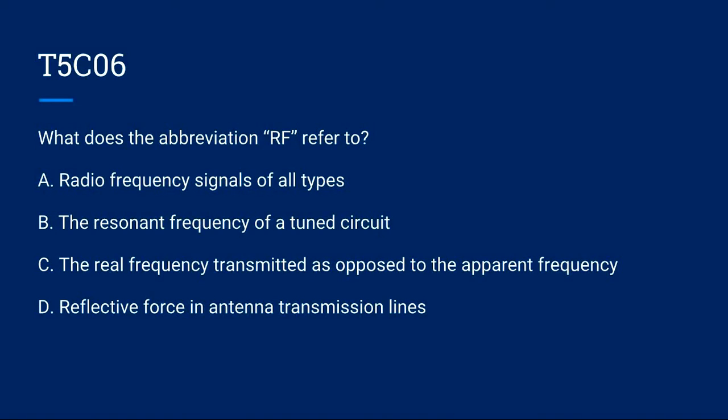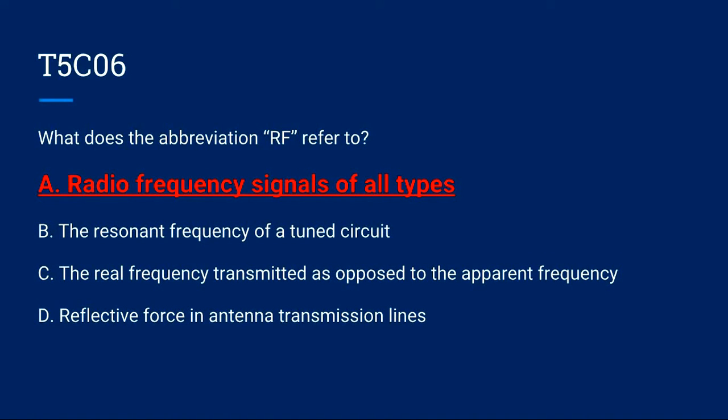T5C06: What does the abbreviation RF refer to? A. Radio frequency signals of all types, B. The resonant frequency of a tuned circuit, C. The real frequency transmitted as opposed to the apparent frequency, or D. Reflective force in an antenna transmission line. Correct answer is A. Radio frequency signals of all types.